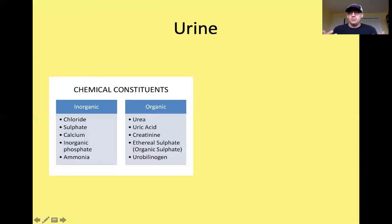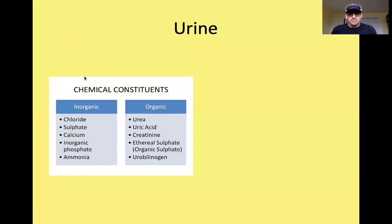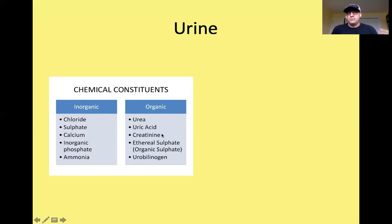Normal urine contains inorganic constituents: chloride ions, sulfate ions (SO4²⁻), calcium ions, inorganic phosphate ions (PO4³⁻), and ammonia. Organic waste products include urea, which comes from protein metabolism; uric acid; and creatinine, which is formed from creatine phosphate found in muscles — creatine phosphate serves as a phosphate storage that can be added to ADP to make more ATP for muscle contraction.